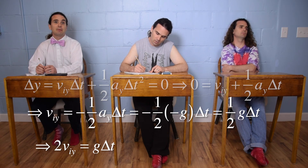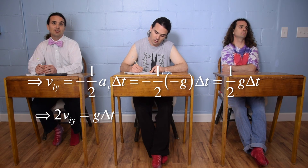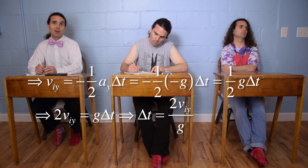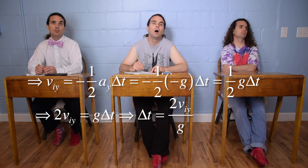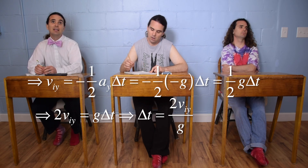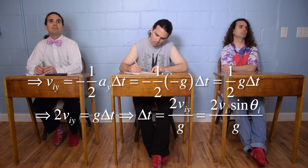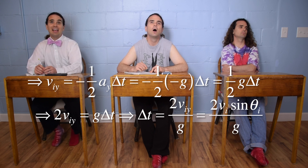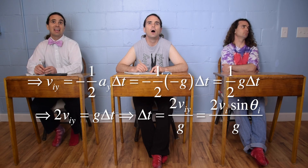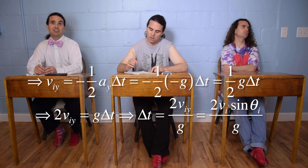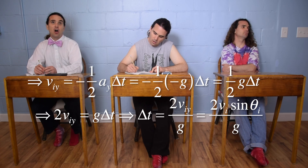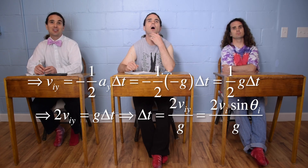Multiply both sides by two to get: two times the velocity initial in the y direction equals the acceleration due to gravity times the change in time. Then divide both sides by the acceleration due to gravity to get: the change in time equals two times the initial velocity in the y direction divided by the acceleration due to gravity. And we can substitute in velocity initial times the sine of the initial angle for the velocity initial in the y direction, giving us: change in time equals two times velocity initial times the sine of the initial angle, all divided by the acceleration due to gravity.